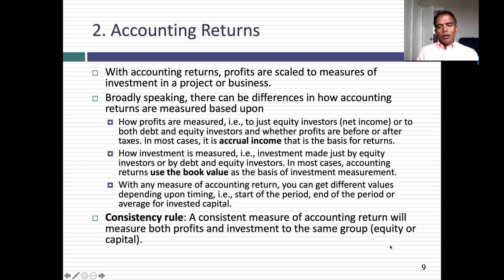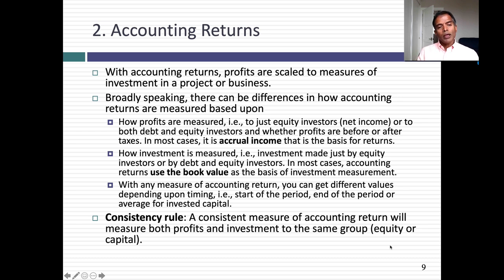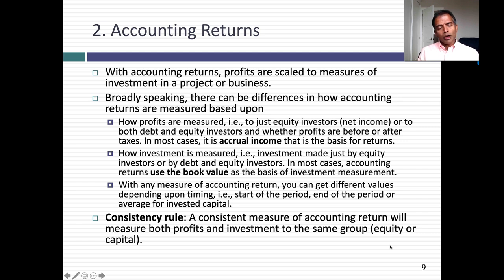Accounting returns measure profits scaled to capital invested in the business rather than to revenues. Why might accounting returns vary for the same company? It depends on how you measure profits — net versus operating, before or after tax — and how you measure investment: equity only, or total capital. Are you looking at returns across time or at a point in time? Don't expect consensus on what the returns are, because the choices you make can significantly affect the result.